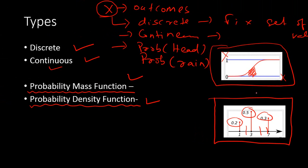In the case of the probability mass function, we can say exactly what the probability is associated with a particular outcome. For example, if somebody asks what's the probability of getting 1 in the first experiment, it's 0.2 — it's very clear.